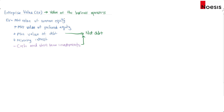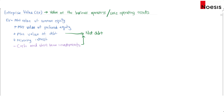Another perspective of enterprise value is that it represents the value of the company's core operating assets. To understand this, let's look at it from the accounting equation perspective, where assets equals liabilities plus equity.